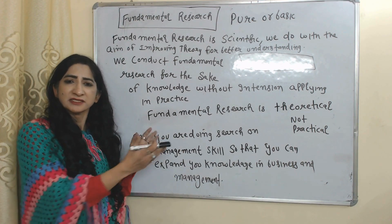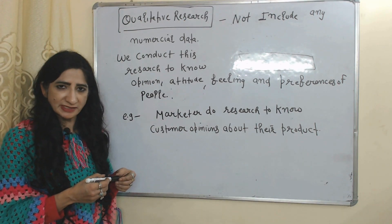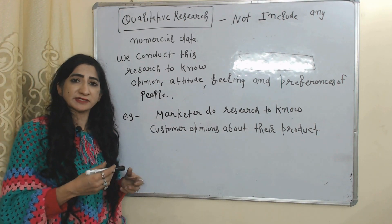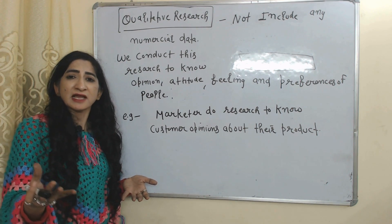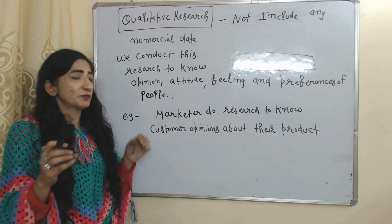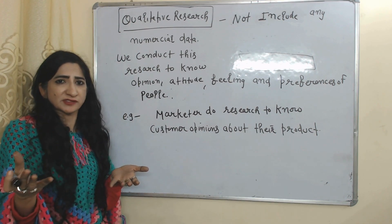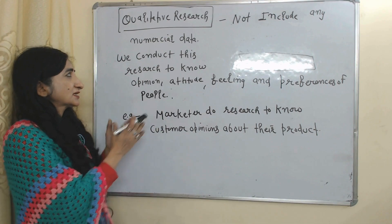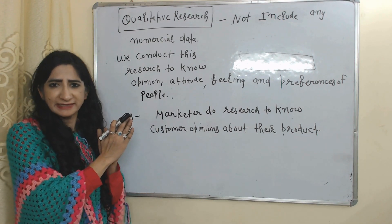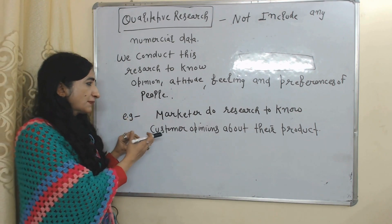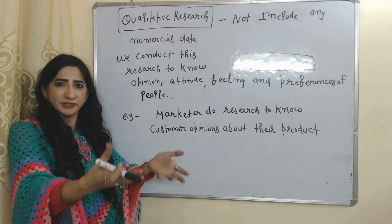For example, if you are doing research on management skills to expand your knowledge in business and management, that would be called fundamental research. Next is qualitative research. We conduct qualitative research in order to know the opinions, attitudes, feelings, and preferences of people. That's why this research is called non-numerical research, because we don't include any numerical data. For example, a marketer doing research to know consumer opinions about their product is an example of qualitative research.